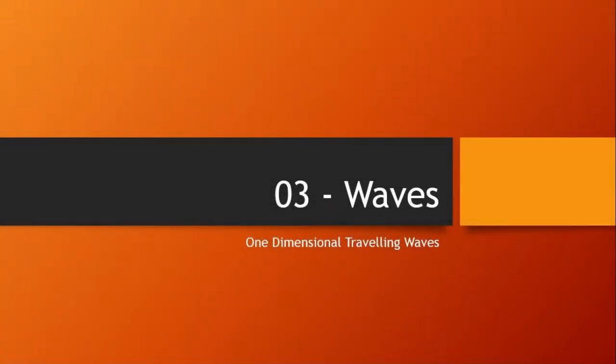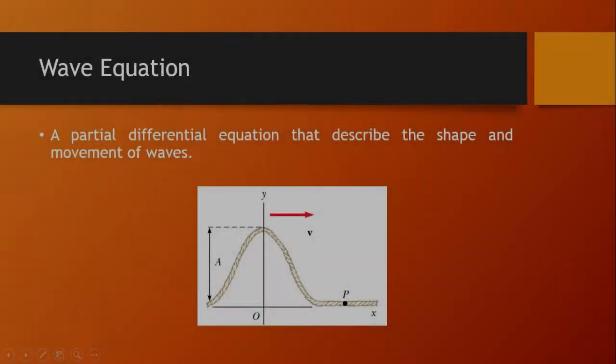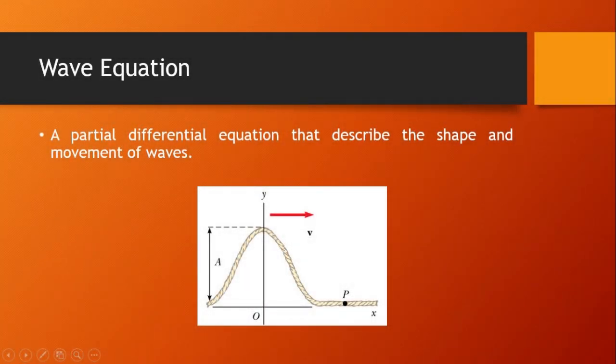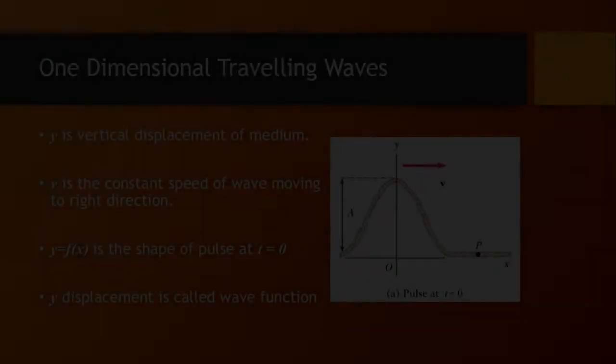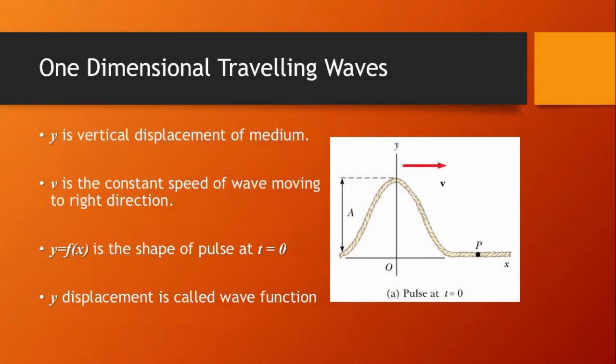Dear students, in these slides we are going to discuss one-dimensional traveling waves. To describe the shape and movement of waves, we use wave equations. A wave equation is actually a partial differential equation that describes the shape and movement of waves. To understand one-dimensional traveling waves, let's consider a wave pulse traveling to the right with constant speed v. You can see it in the figure: it is a string and there is a wave in the string.